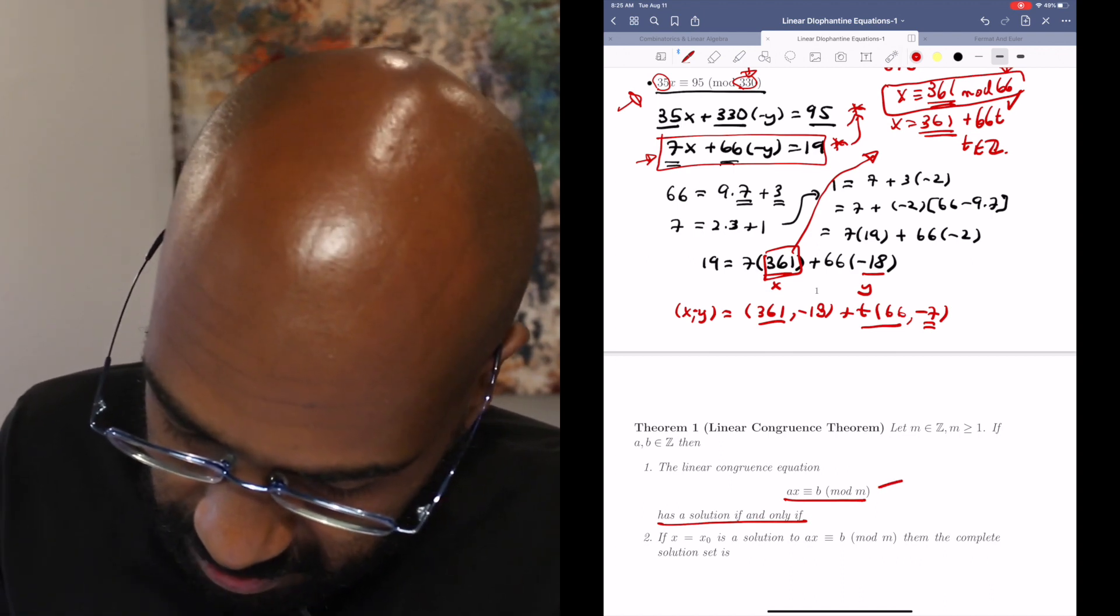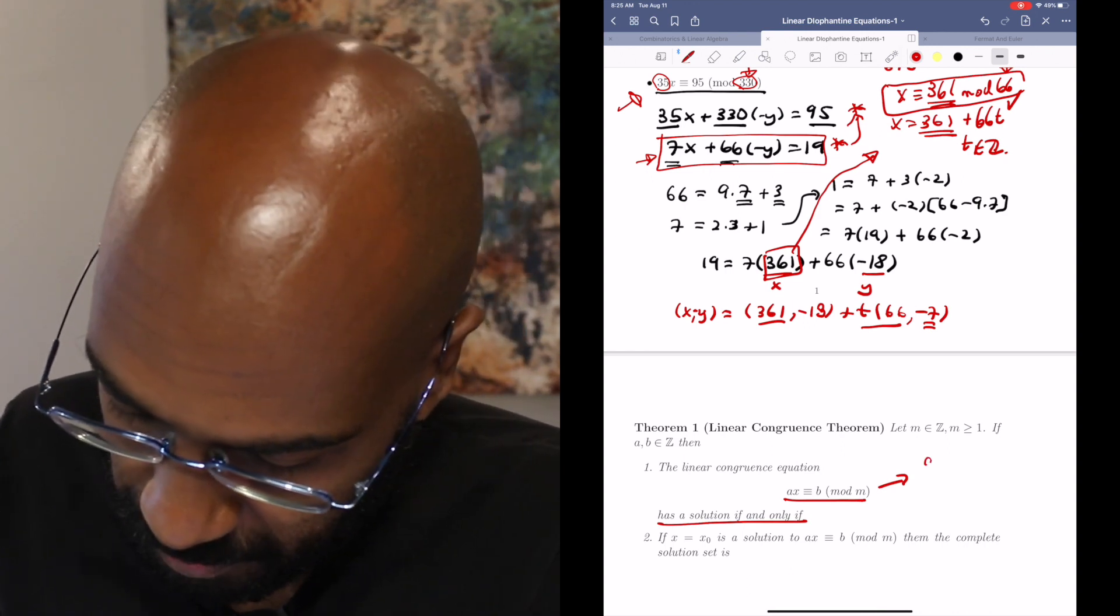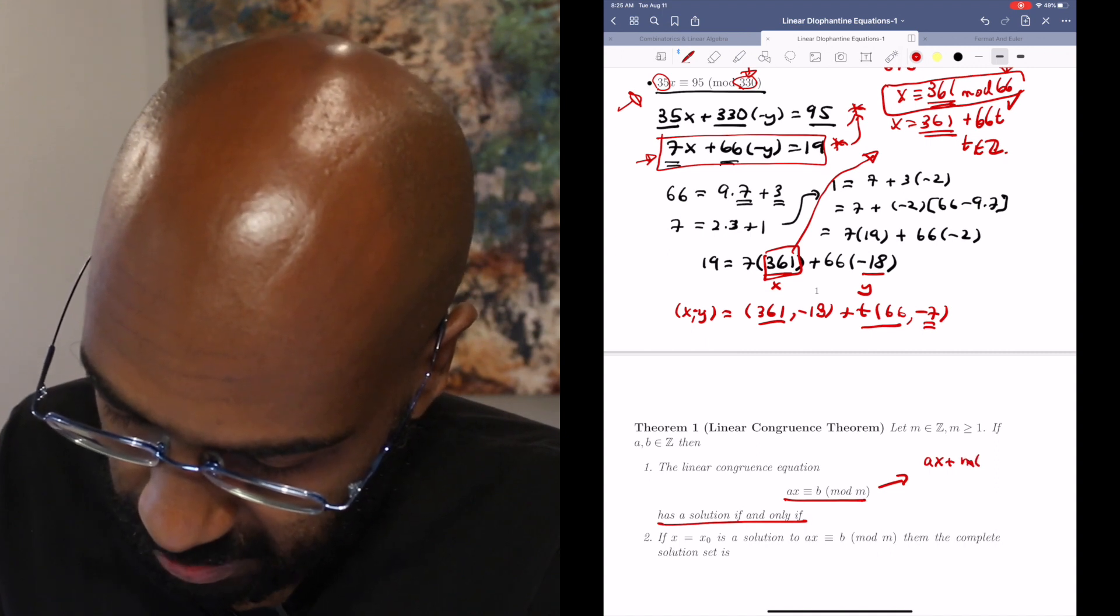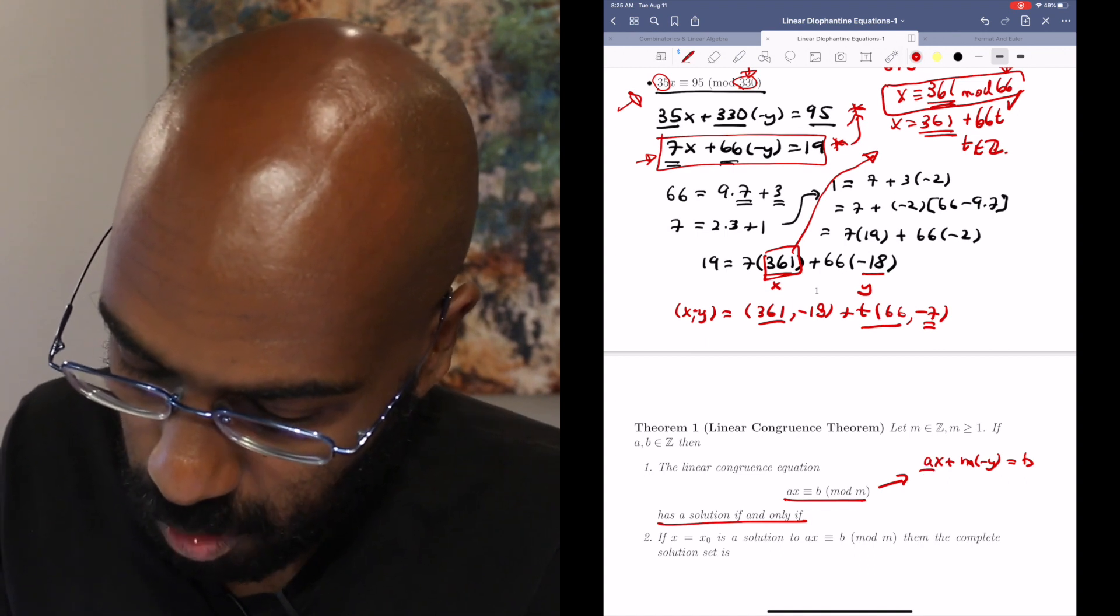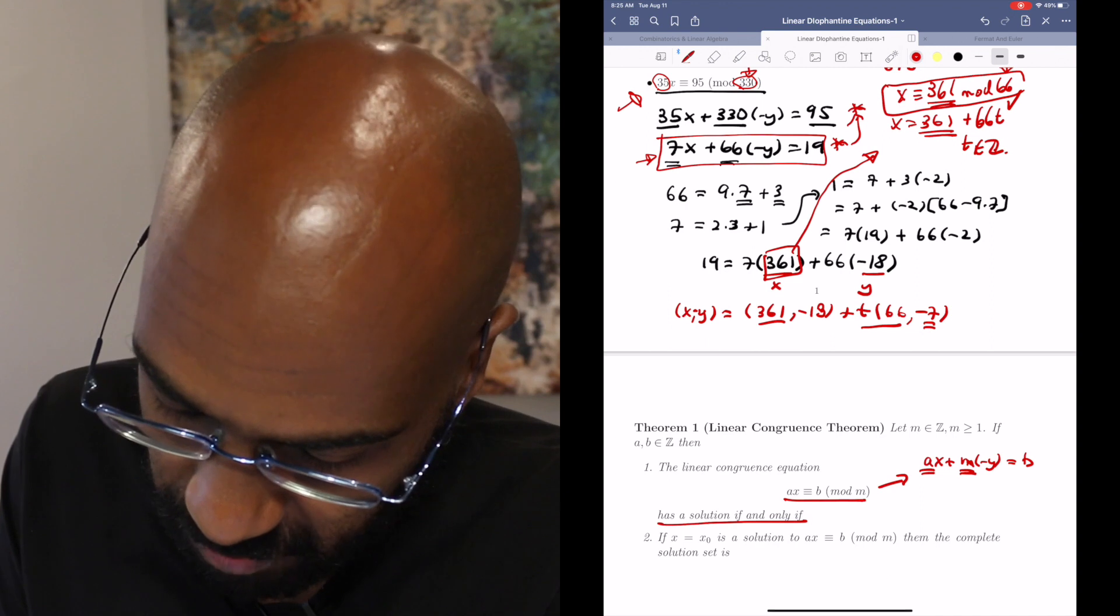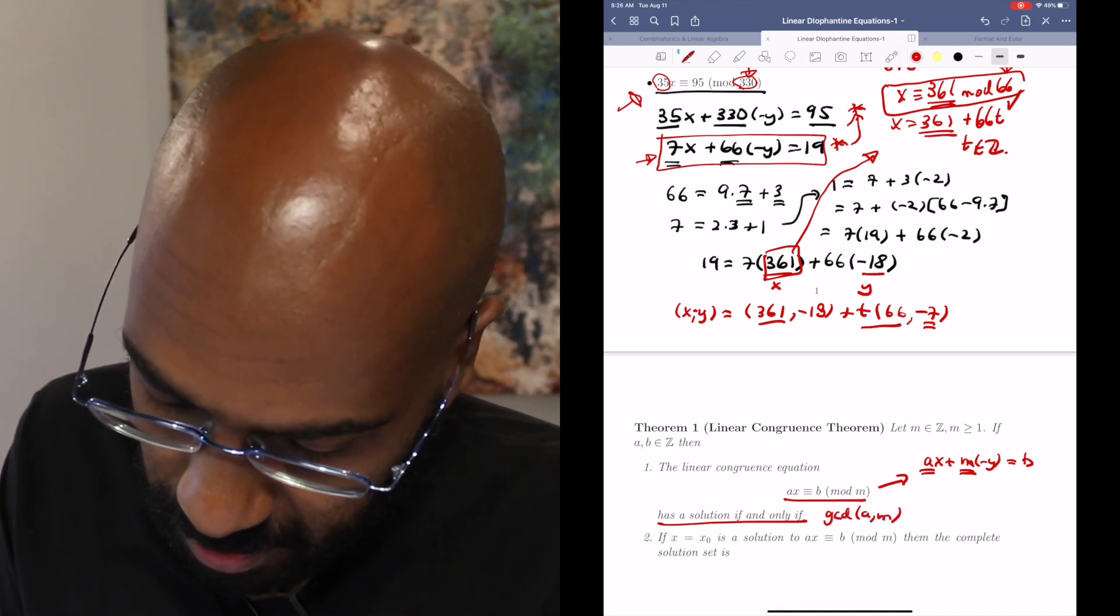finding values of x and y for which ax plus m times negative y is b. And from our work on linear Diophantine equations, we have a solution for this if and only if the GCD of a and m divides b.